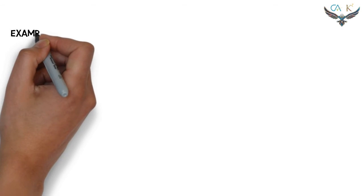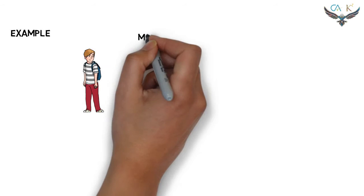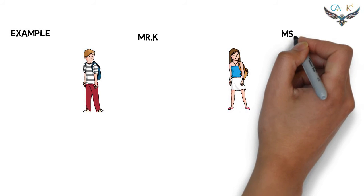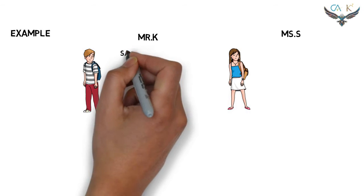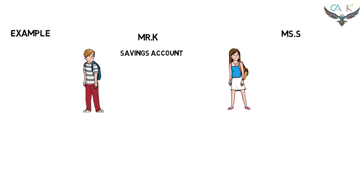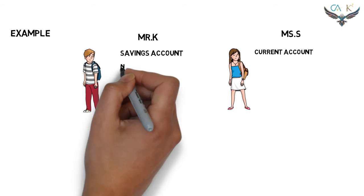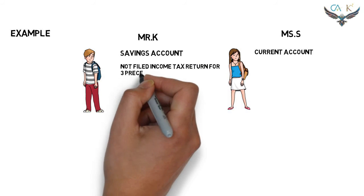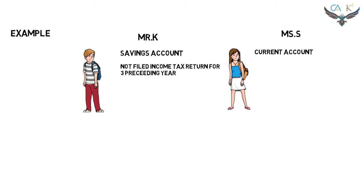Let's understand this through an example. Consider Mr. K and his friend Miss S — one of them has a savings account and the other has a current account. This example is designed to show that Section 194N is applicable to both savings bank accounts as well as current accounts.